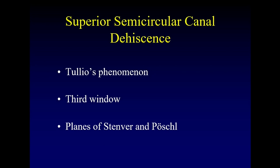Superior semicircular canal dehiscence is when there is a hole in the bony covering that normally covers the superior semicircular canal. Pressure can go from the semicircular canals into the cranial vault, allowing transmission of pulsation between the inner ear and the intracranial vault. This is called a third window phenomenon. We should only have two windows — a round window and an oval window — and the round window allows fluid to shift when you press on the oval window with the stapes. Adding a third window on the superior semicircular canal disrupts that entire system.